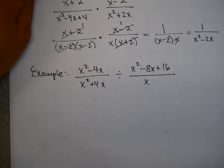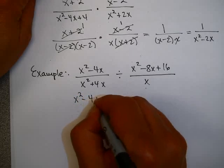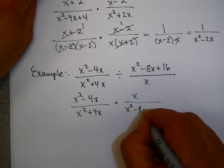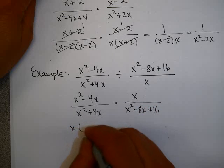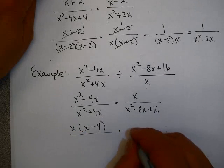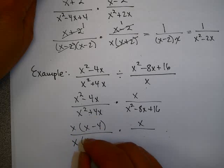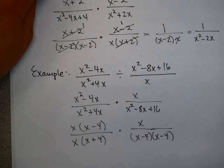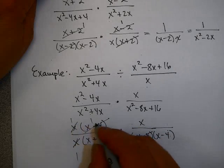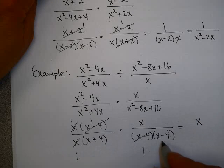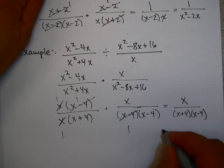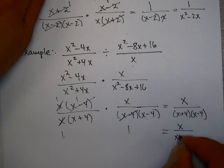See if you can try this one on your own. I change division to multiplication by the reciprocal, then factor each one. I can factor out an x here; can't do anything to this numerator. Factor out an x from this denominator. This one factors as x minus 4 times x minus 4. x goes into x once, and x minus 4 goes in once here and once here. I get x on top, and x plus 4 times x minus 4 on the bottom. WebAssign might prefer you to multiply out the denominators, giving x squared minus 16.